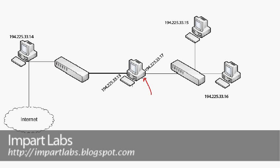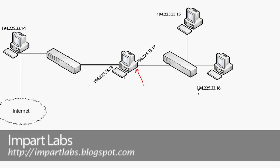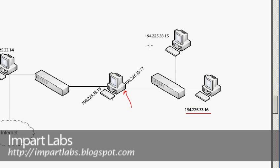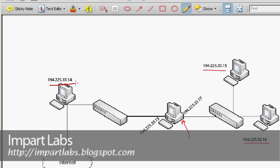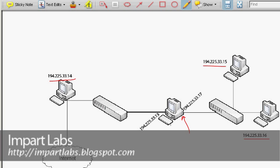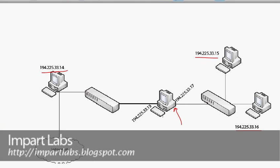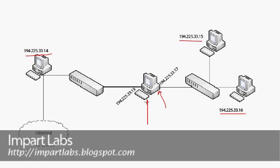We added another network card here, and we have to configure another IP address for it — namely 194.225.33.17. The IP addresses of the other machines have remained the same. The only difference here is that this computer has two network cards and two different IP addresses associated with each of them.